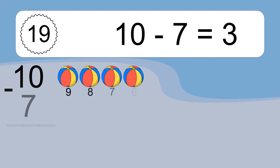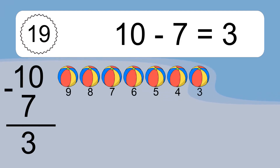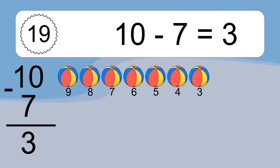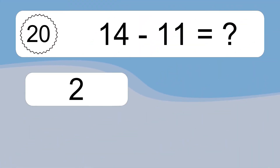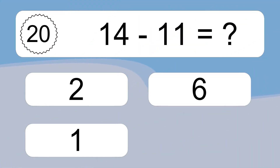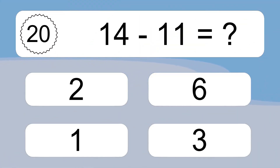10 minus 7 equals what? 10 minus 7 equals 3. Let's count it: 9, 8, 7, 6, 5, 4, 3.